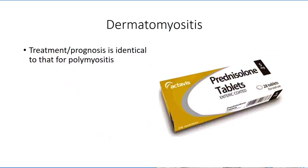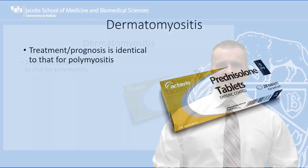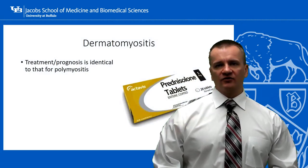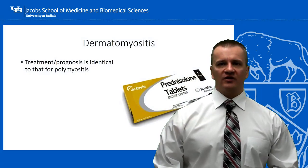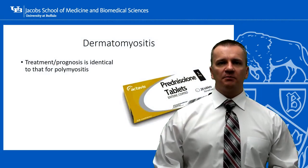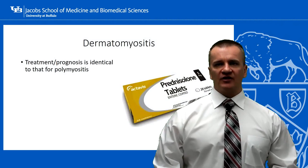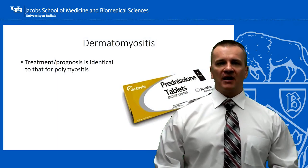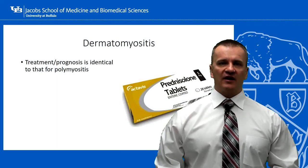Treatment for dermatomyositis is essentially the same as was described for polymyositis. The patient will be prescribed a high dose of corticosteroids to control tissue damage, with the dosage being cut back to a regulatory dosage that prevents recurrence while minimizing adverse side effects.